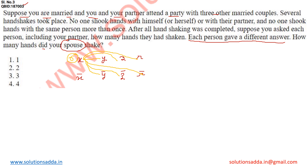Now let's consider Y. Y already shook hands with X. Y cannot shake hands with himself or his wife. Y can shake hands with Z, R, Z̄, and R̄. So total handshakes done by Y equals 5, and 5 is different from 6.